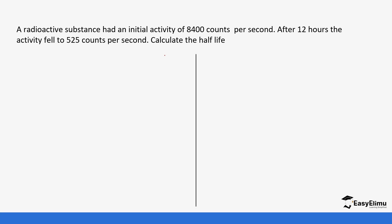Let's look at another question. In this case we are using count. I told you you can be asked questions with count. A radioactive substance has an initial activity of 8,400 counts per second. After 12 hours the activity fell to 525 counts per second. Calculate the half-life. First, we need to determine how to move from 8,400 to 525 to know how many halves.